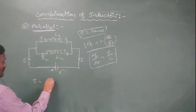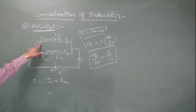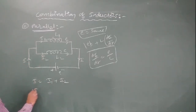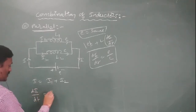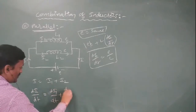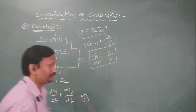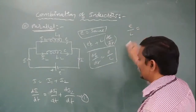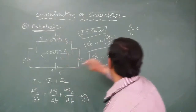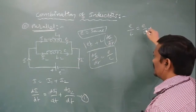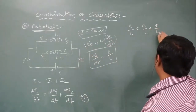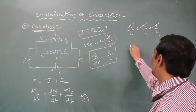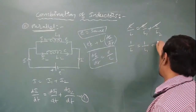The total current from the source divides into parts: I1 is the current through the first inductor and I2 is the current through the second inductor. Differentiating on both sides, dI/dt equals dI1/dt plus dI2/dt. Using the relation dI/dt equals E/L, we get E/L equals E/L1 plus E/L2. The numerator E is common and cancels. Therefore, when two inductors are joined in parallel, the effective inductance is given by 1/L equals 1/L1 plus 1/L2.